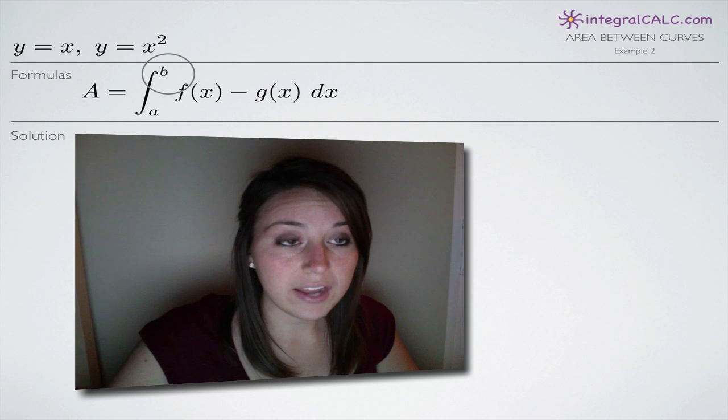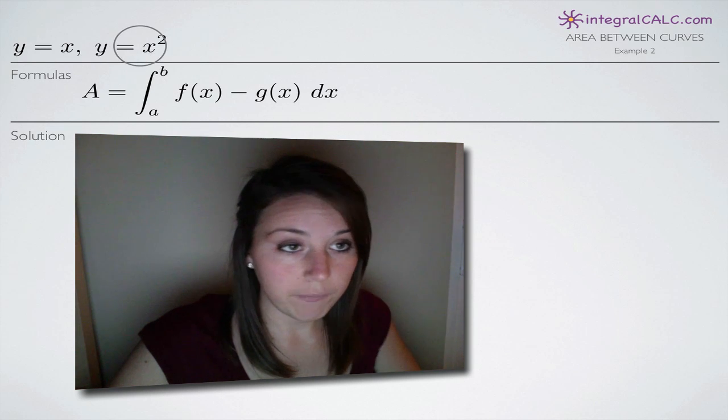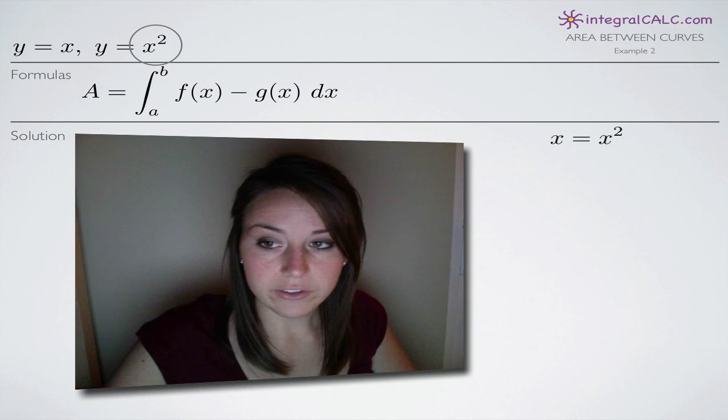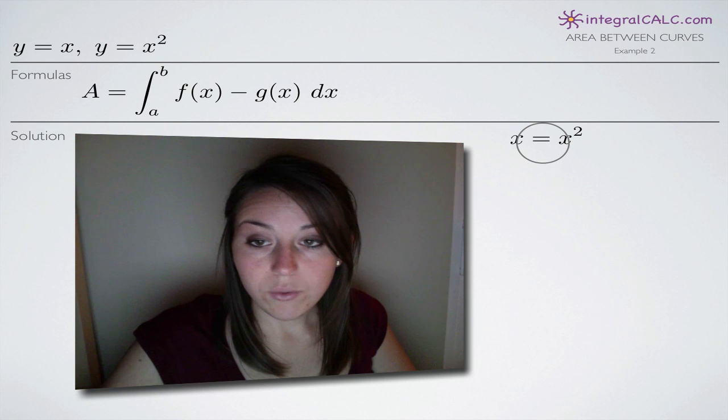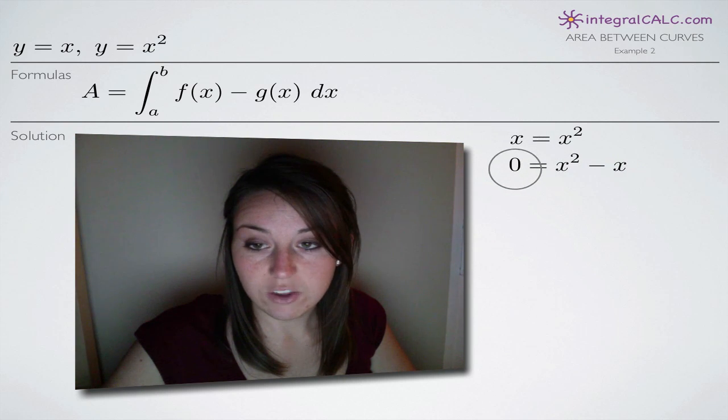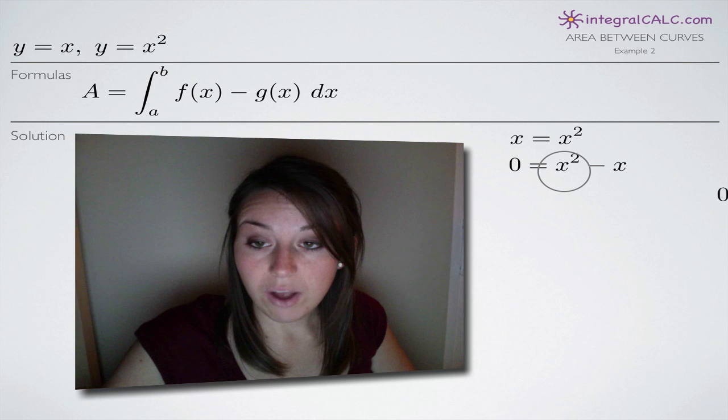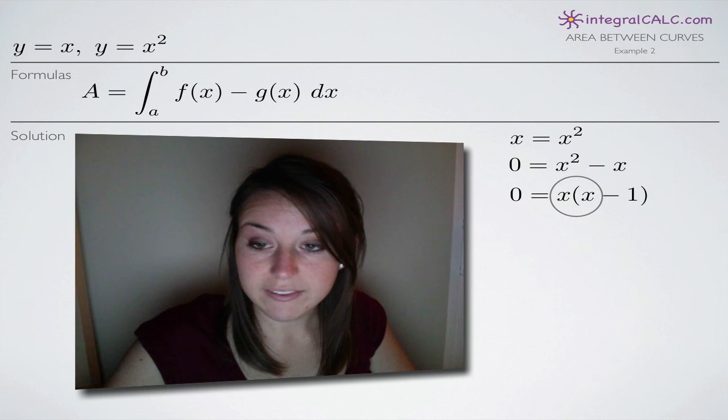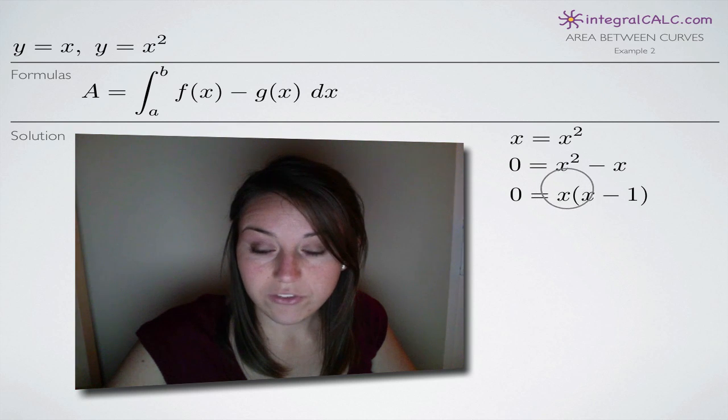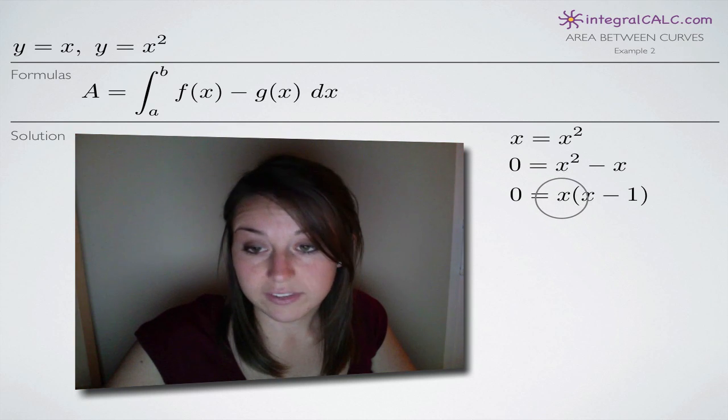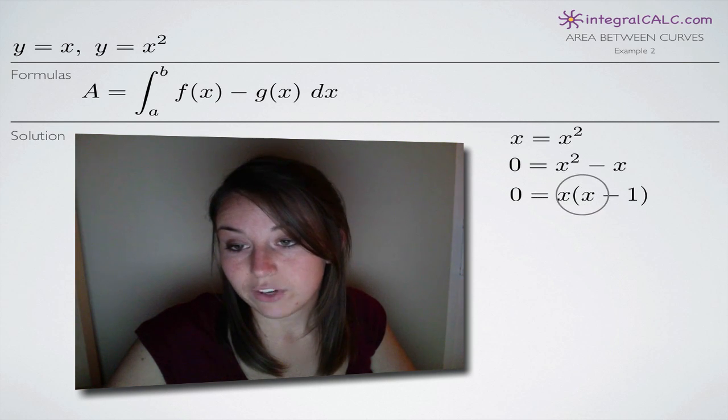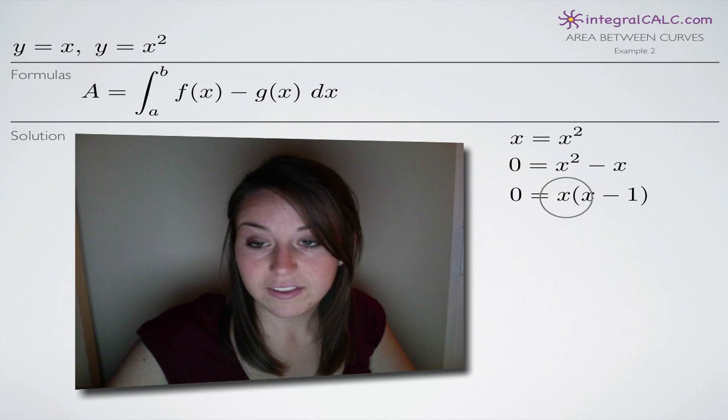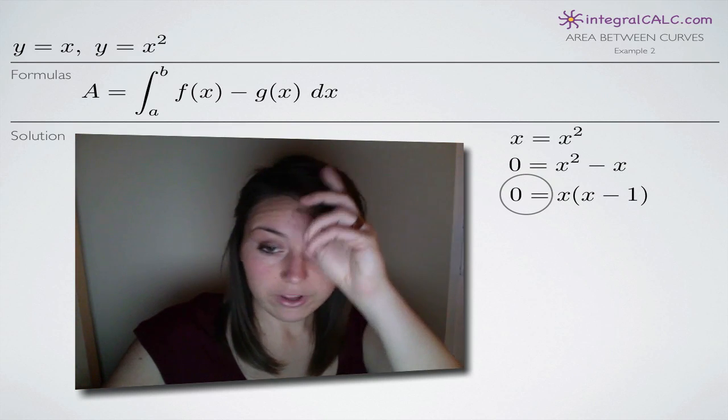And the way that we're going to do that is by setting our two equations equal to one another. So we're going to set x equal to x squared and we're going to solve this equation for x. So the way that we'll do that is subtract x from both sides to get this equation set equal to zero. Then we'll factor out an x on the right-hand side and we'll end up with x times x minus 1. And what that tells us is that according to this term right here, x could be equal to zero because if x were equal to zero, we'd have zero out in front. We'd have zero multiplied by this whole term, everything inside the parenthesis, and we get zero equals zero which would satisfy our equation.